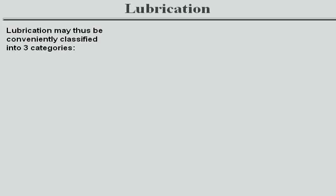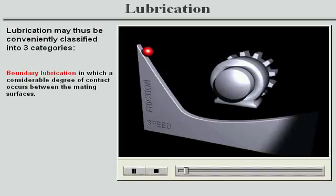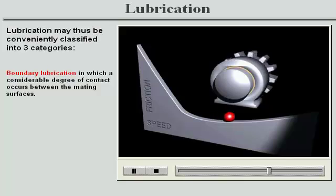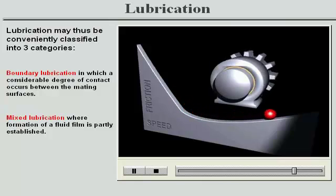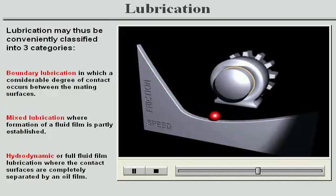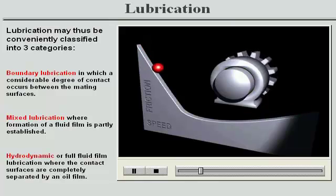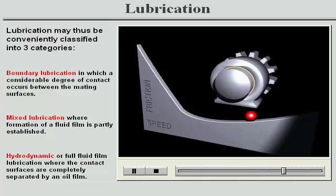Lubrication may thus be conveniently classified into three categories: boundary lubrication, in which a considerable degree of contact occurs between the mating surfaces; mixed lubrication, where formation of a fluid film is partly established; and hydrodynamic, or full fluid film lubrication, where the contact surfaces are completely separated by an oil film.